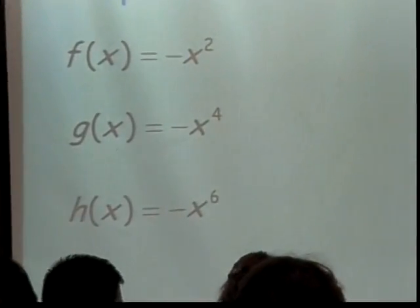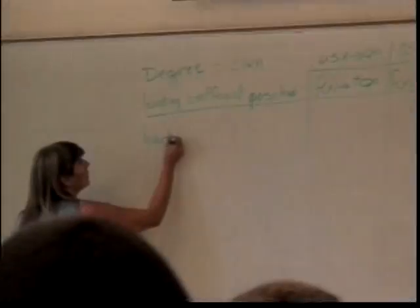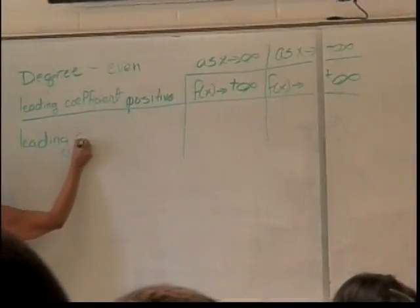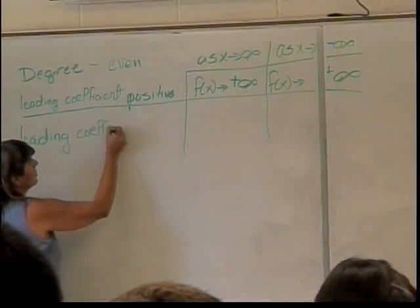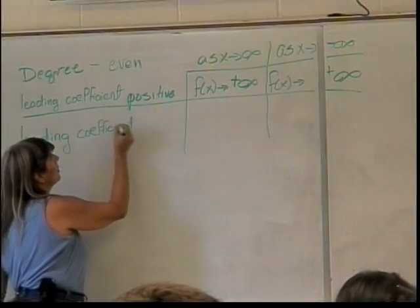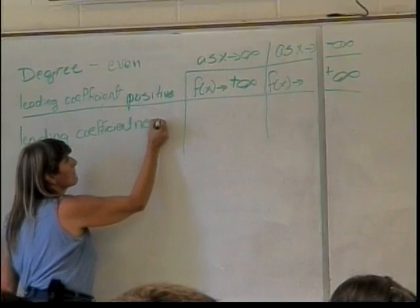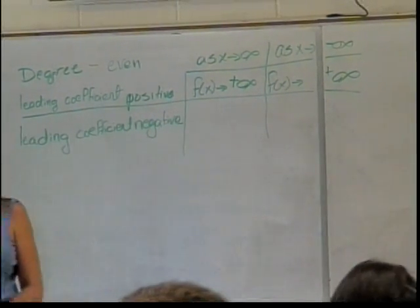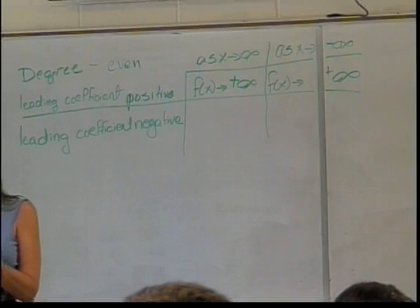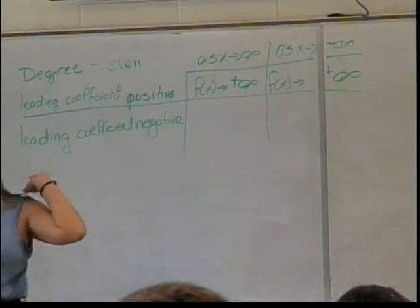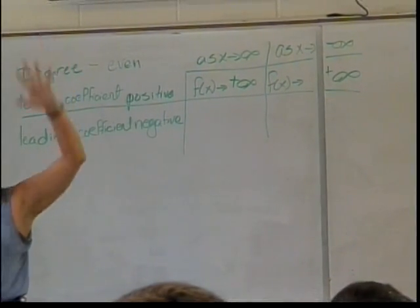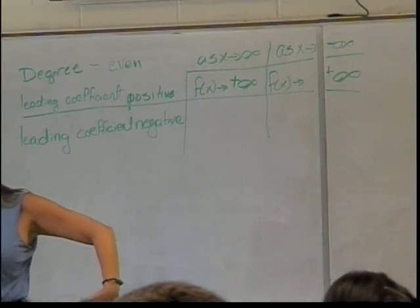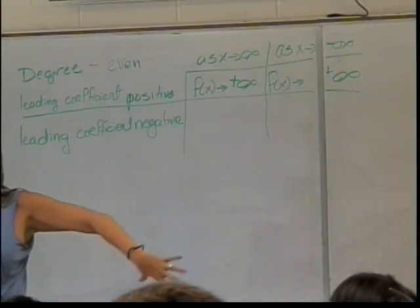What happens when I make the leading coefficient negative? What happens to the graph? How does it look? It flips over what? The x-axis, so instead of being like this, it looks like this. Yes? Everybody agree? All right.